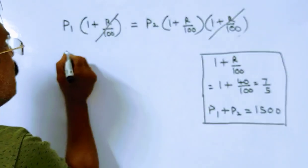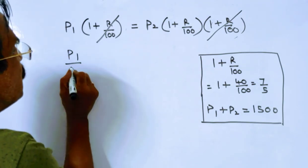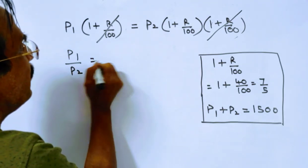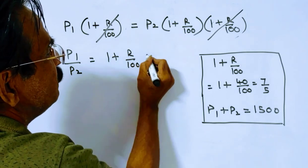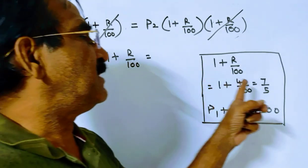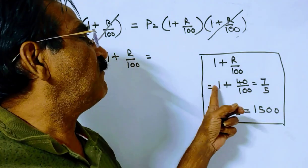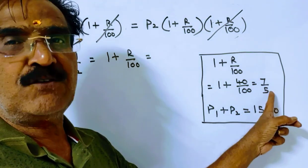So this and this cancel. Now P1 into P2, P1 into P2 is equal to 1 plus R by hundred. Friends, 1 plus R by hundred, 1 plus 40 by hundred, 1 40 by hundred, 27's, 25's.